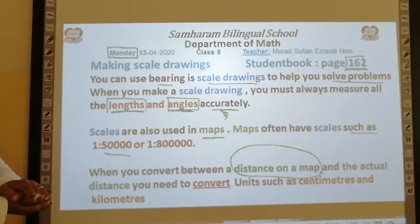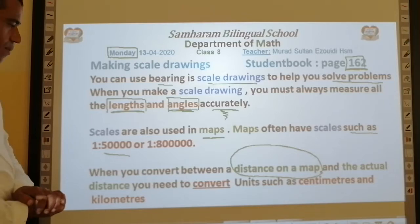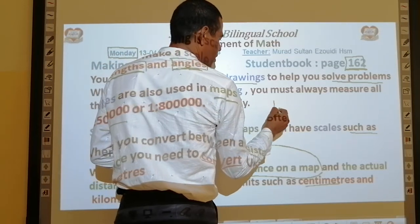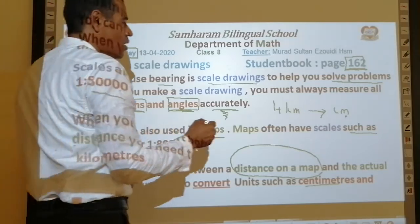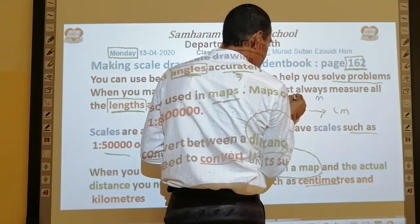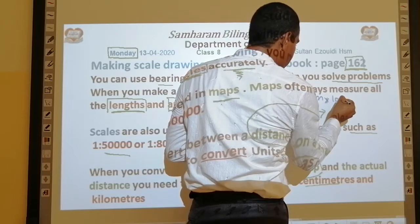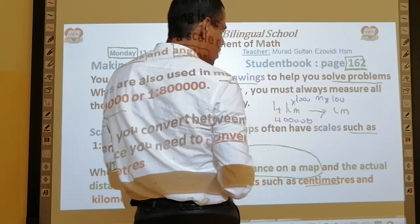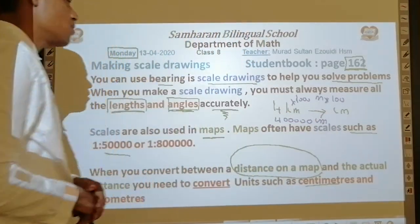When you convert between a distance on a map and the actual distance, you need to convert units. For example, if you convert from 4 kilometers to centimeters, you should first multiply by 1,000 to get meters, then multiply by 100 to get centimeters. So 4 kilometers equals 400,000 centimeters.